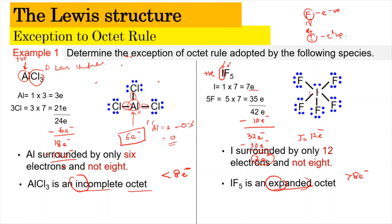We can confirm IF5 is stable by counting formal charges. The formal charge of iodine is 7 minus 2 lone pair electrons minus 5 bonding pairs = 0. The formal charge of fluorine is 7 minus 6 lone pair electrons minus 1 bonding pair = 0. So the structure is stable and it adopts the expanded octet.